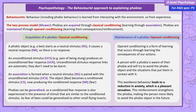The second part of the two-process model suggests that phobias are maintained through operant conditioning, a form of learning that occurs through the consequences of our actions. A person with a phobia is aware of it and may try to avoid the phobic object and situations that put them in contact with it. This avoidance leads to a reduction in anxiety, which is a pleasant sensation — it acts as reinforcement, strengthening the phobia and making avoidance more likely in the future.